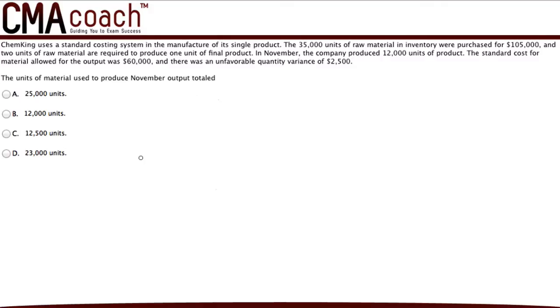ChemKing uses a standard costing system in the manufacture of its single product. The 35,000 units of raw material in inventory were purchased for $105,000, and two units of raw material are required to produce one unit of final product. In November, the company produced 12,000 units of product. The standard cost for material allowed for the output was $60,000, and there was an unfavorable quantity variance of $2,500. And the question is, the units of material used to produce November output totaled.